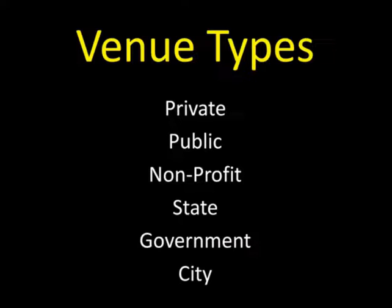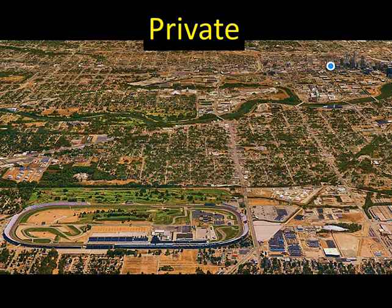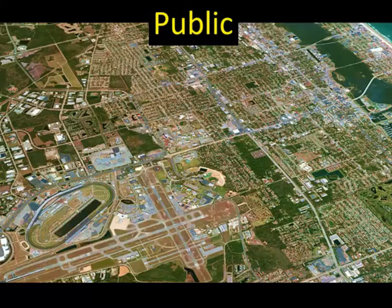Motorsport venues vary considerably across six different types. We'll begin with the most common: the privately owned venue. Our best example is the Indianapolis Motor Speedway, which is not owned by the government or the city — it is owned by a private individual or company. We know that most of that involves the Hulman family, which for the last 50 to 60 years has been an integral part of privately owning the Indianapolis Motor Speedway. This differs from Daytona International Speedway, which is actually a publicly traded company where you can go out and buy stock.